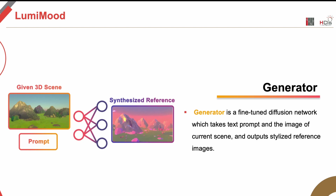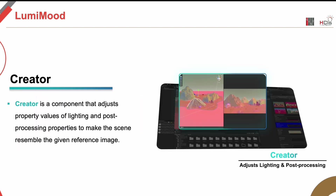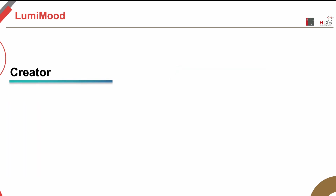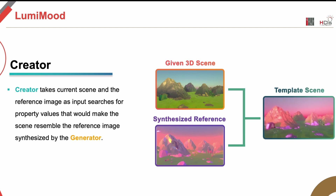The second component of LumiMood is the creator, a component that adjusts appropriate values for lighting and post-processing properties to make the scene resemble the image that the generator synthesized. Specifically, the creator is a grid search algorithm that finds optimal values for lighting and post-processing components. It takes the current scene and the reference image as inputs and outputs a template scene that resembles the reference image.